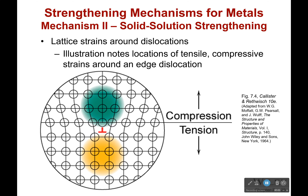A second way we can strengthen a material is through solid solution strengthening. If we have an extra atom where there shouldn't be one and we stick one in here, it would begin to cause strain on everything around it — pressing on everything outside of it.